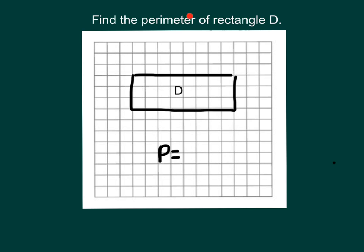Here we're asked to find the perimeter of rectangle D. The perimeter is the distance around the rectangle. So we'll start in a corner and count the distance around it: 1, 2, 3, 4, 5, 6, 7, 8, 9, 10, 11, 12, 13, 14, 15, 16, 17, 18, 19, 20, 21, and 22. The perimeter is 22 units.